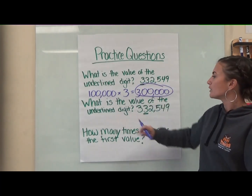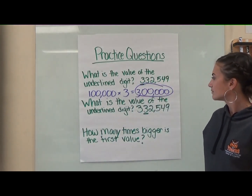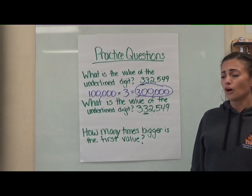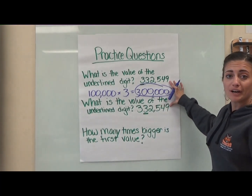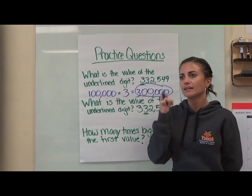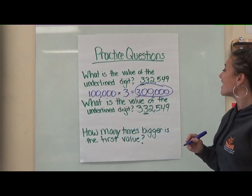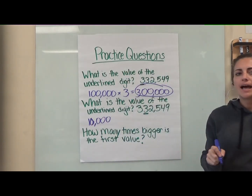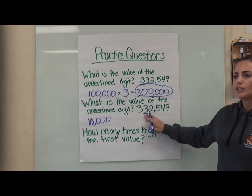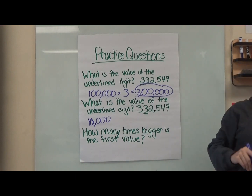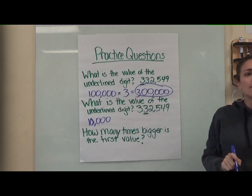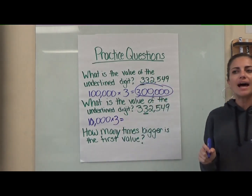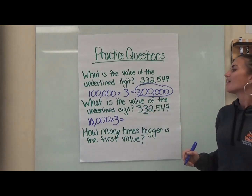Who can read this next question? What is the value of the underlined digit? Three hundred thirty-two thousand five hundred forty-nine — same number. But now, what place value are we looking at? Ten thousands. So I'm starting with the ten-thousands place. What am I going to multiply my ten thousand by? By three, because that's the digit I'm trying to find the value of. So what is the value of the underlined three? Thirty thousand.